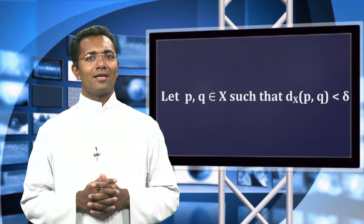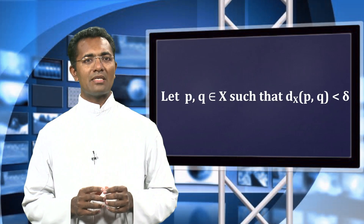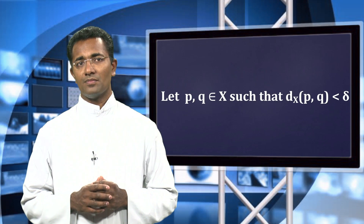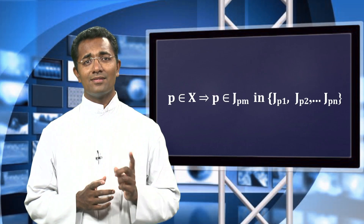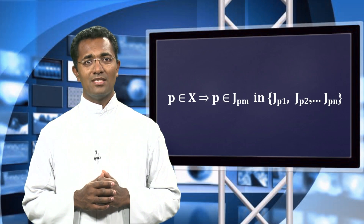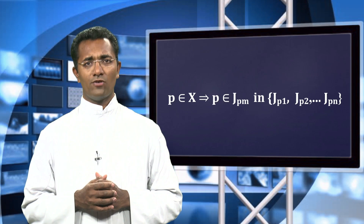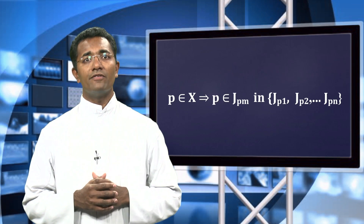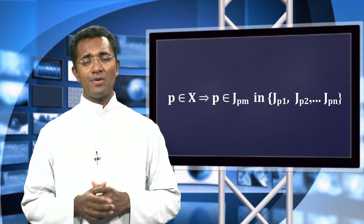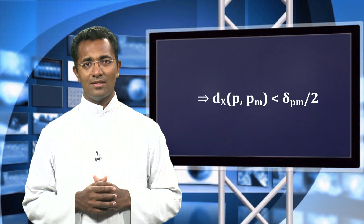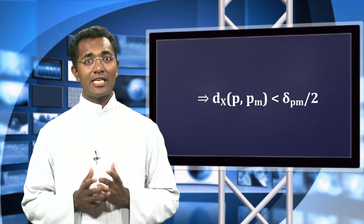Now, let q and p be chosen from X such that the distance between them is less than delta. As p belongs to X, there exists a J_{pm} such that it belongs to the finite collection of open sets that covers X. However, the center of J_{pm} is p_m; hence, the distance between p and p_m is less than delta_{pm} over 2.